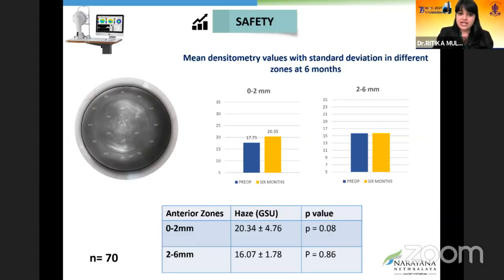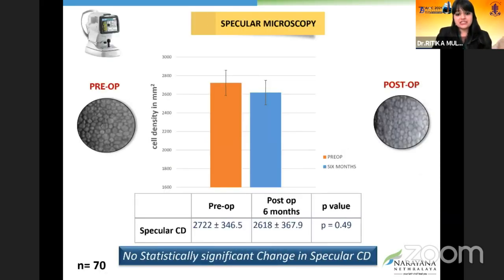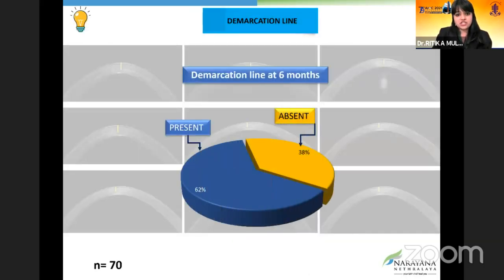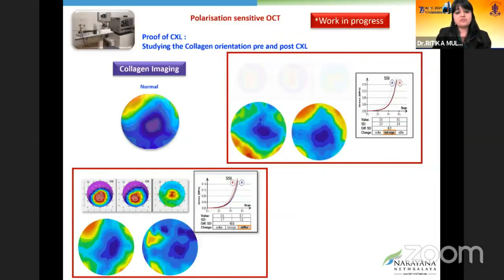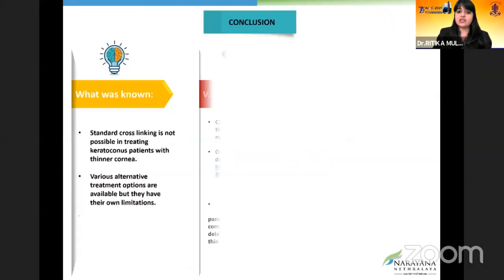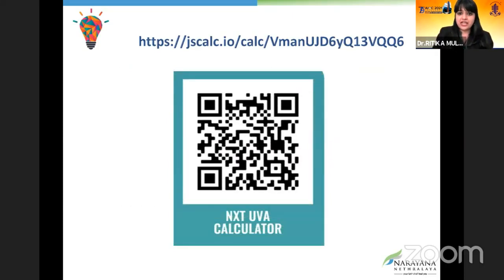The safety profile was very good — no haze was seen on Pentacam or clinically. No change in lines was seen in 51% of cases; gain of one line in 24%, gain of two lines in 14%. There was no statistically significant change in specular count. There was stable keratometry, a good demarcation line in 62%, and good outcomes. Biomechanical stiffness was present in 35%, and ASOCT showed changes for the betterment, demonstrating a stiffer cornea. Our calculator is freely downloadable and simple to use — the URL and QR code are provided.